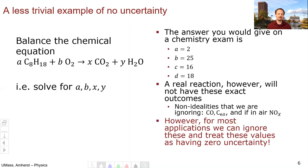However, for most applications, you can ignore these values and treat these numbers—2, 25, 16, and 18—as having zero uncertainty. And that's good enough. Often there are other uncertainties in your experiments, in your calculations that are much bigger, and so you can safely ignore these.